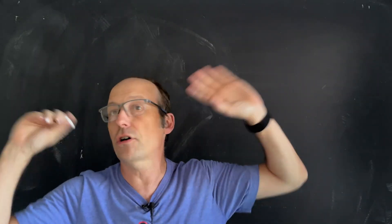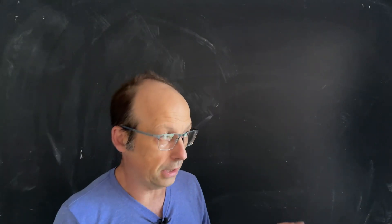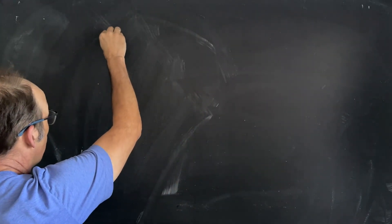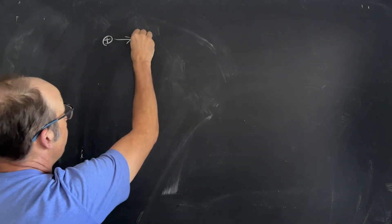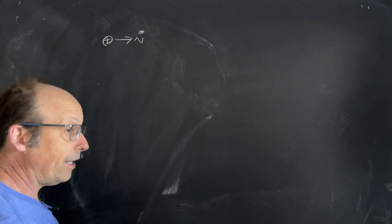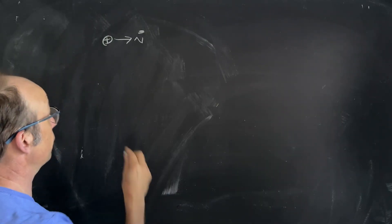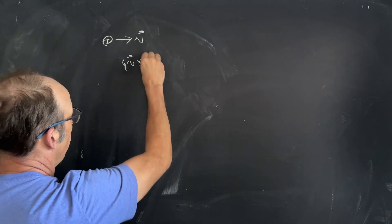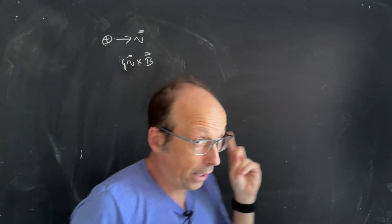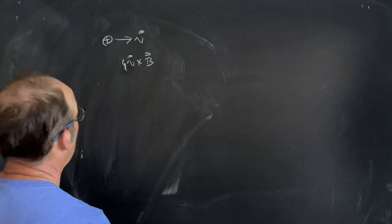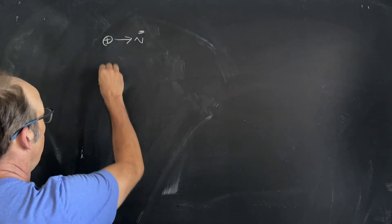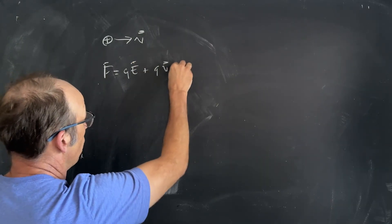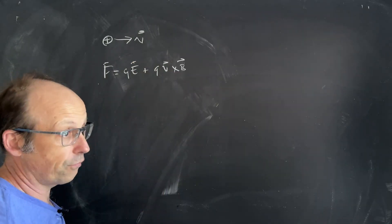Number one is the Lorentz force. I'm going to do the same order that the book does. The Lorentz force says, suppose that I have a charge right here and it's moving with a velocity V. That charge is going to experience a magnetic force that looks like this: QV cross B. It could also experience an electric force. So we usually like to combine those two together with the Lorentz force: F is Q times the electric field plus Q times V cross B. That's the force on a charged particle.